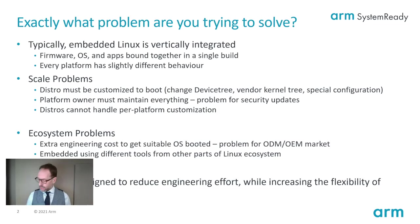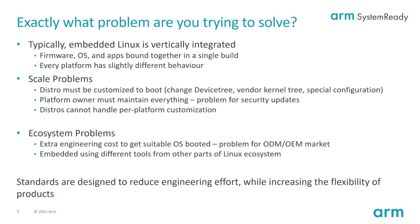So, what exactly am I trying to solve? Typically, embedded Linux is vertically integrated — we've got the firmware, the operating system, and applications all bound up together in a single build. Every platform has slightly different behavior. We deal with this with configurations: bring a new piece of hardware in, change the configuration, and we've got a new image. Do it again with a different application, we come up with a new build. So with every change that goes on, it means turn the crank and a new image.